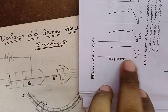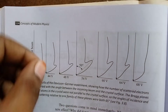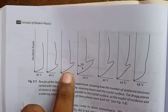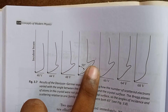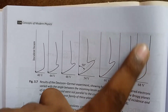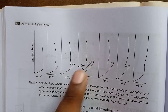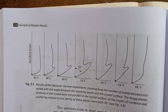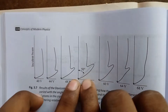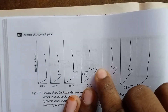At 54 volts, there is a maximum bump in the intensity curve at 50 degrees. This represents maximum electron diffraction. So the key observation is: at an accelerating voltage of 54V, the maximum diffraction occurs at a scattering angle of 50 degrees.